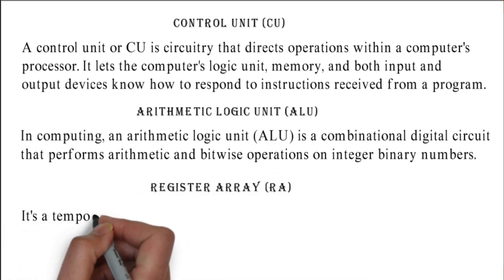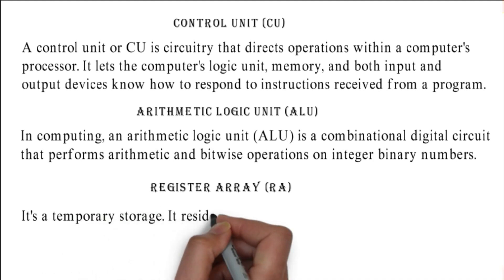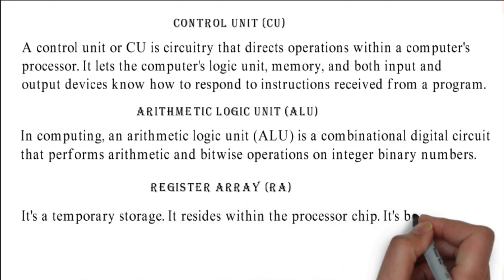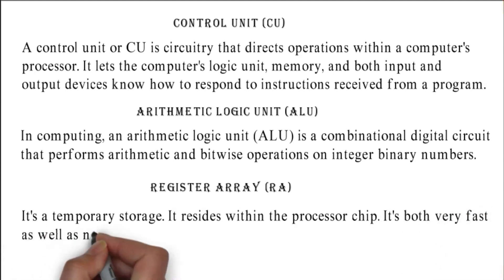Register array: it's a temporary storage. It resides within the processor chip. It's both very fast as well as nearer to CPU than RAM.